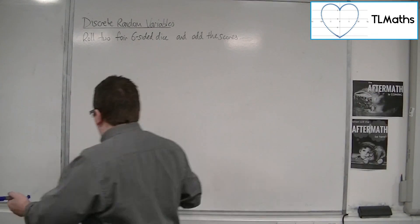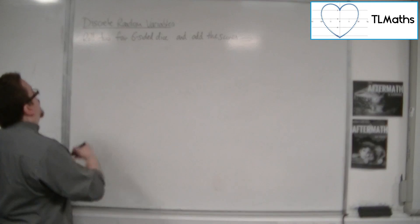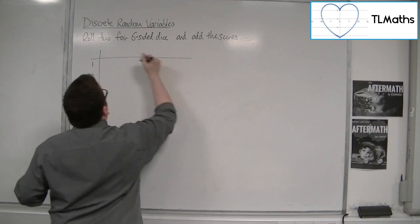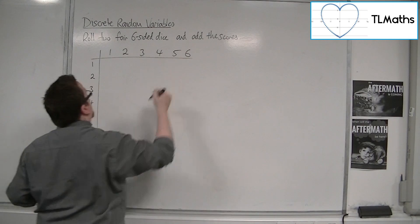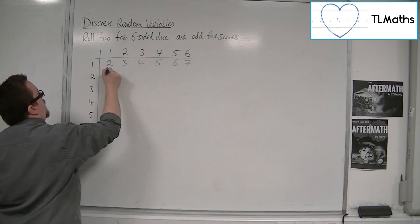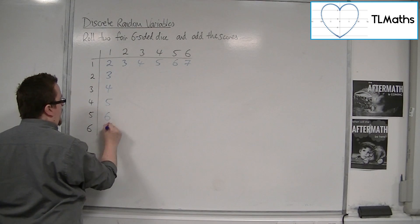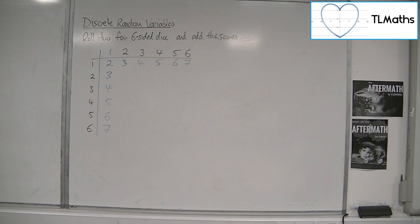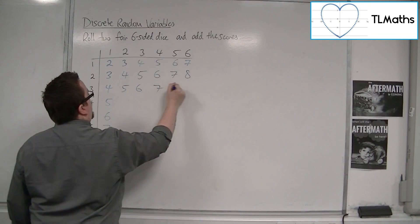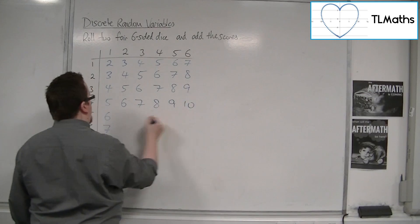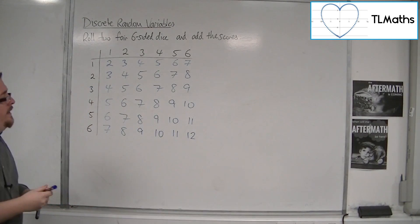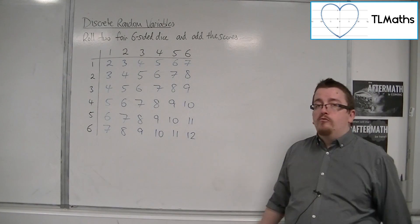So what we can do is we can draw out a table of the possible results. I would have 1, 2, 3, 4, 5, and 6 for the first die. And then the scores of the second die: 1, 2, 3, 4, 5, and 6. And then I could add those scores together. 2, 3, 4, 5, 6, 7. Then 3, 4, 5, 6, 7, 8. Then 4, 5, 6, 7, 8, 9. Then 5, 6, 7, 8, 9, 10. Then 6, 7, 8, 9, 10, 11. And finally 7, 8, 9, 10, 11, and 12. This table shows me all of the possible results that I can get.